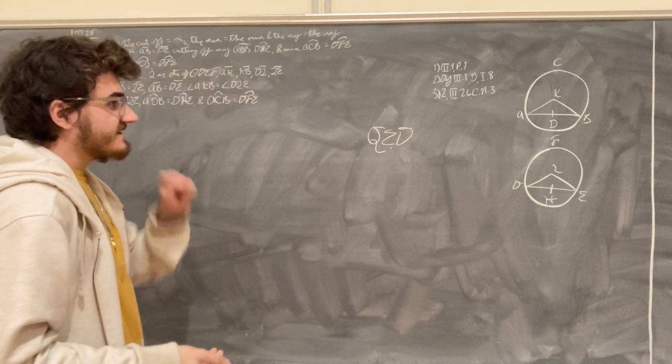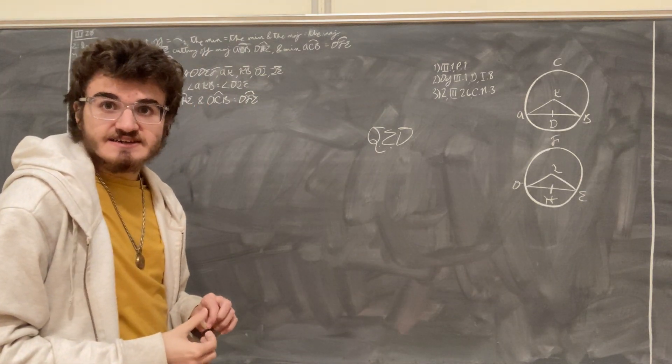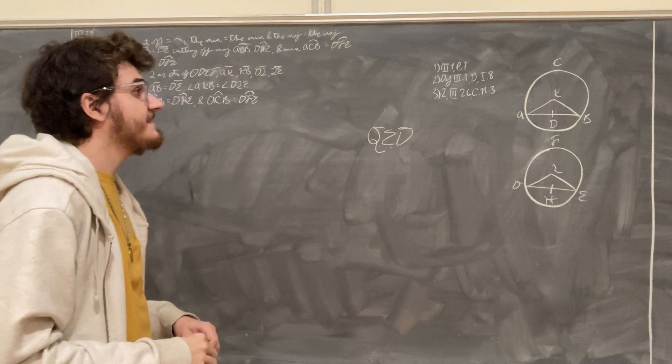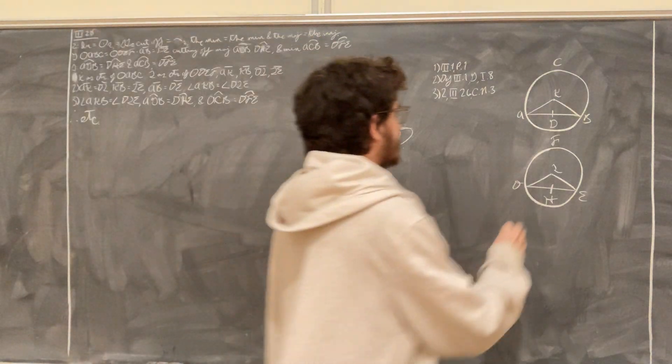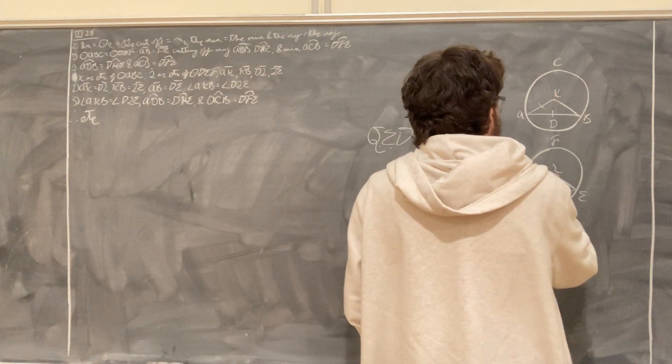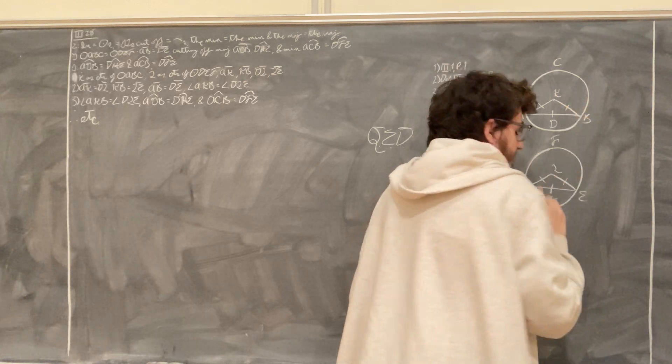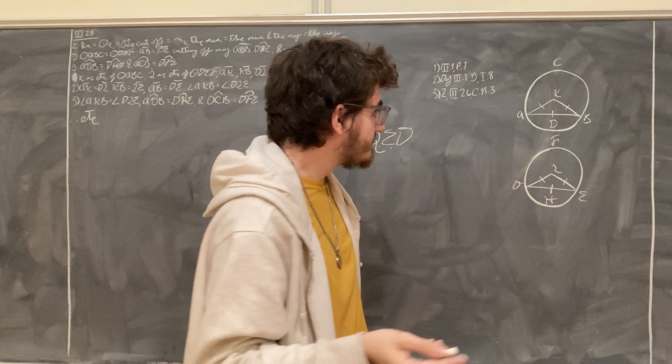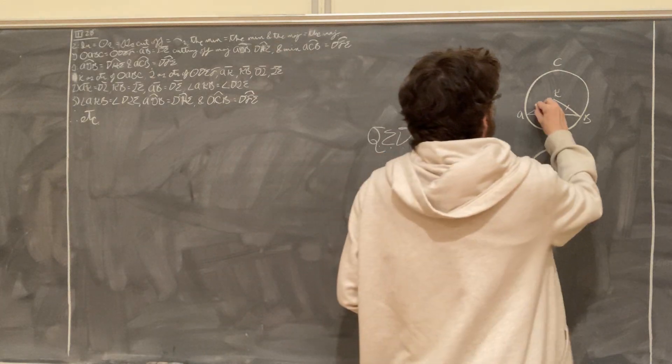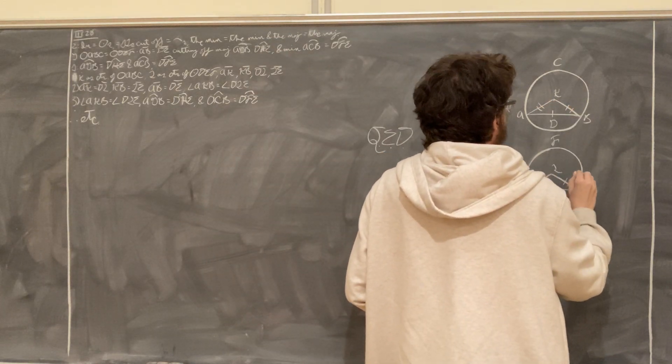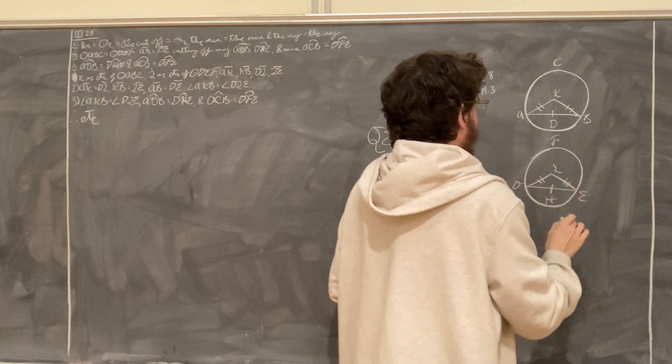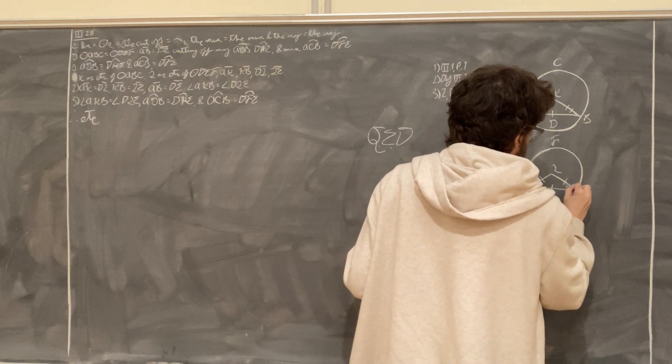Now, because the circles ABC and DEF are equal circles, we know that the radii in them must be equal. So we can say that AK is equal to DL, and KB is equal to LE. It's definition 3-1.